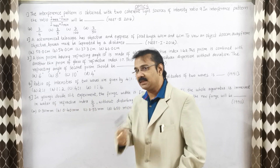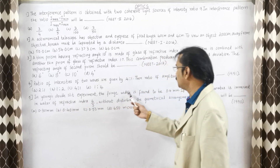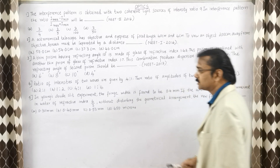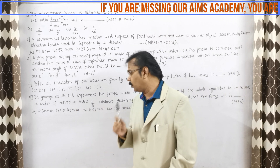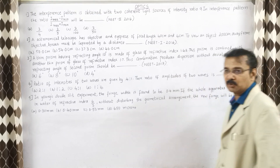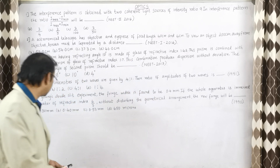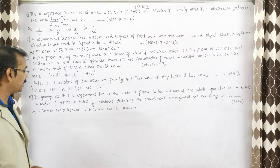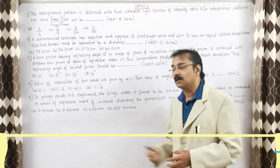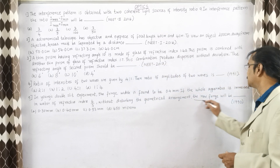Young's double-slit experiment problems are very important. In Young's double-slit experiment, the fringe width is 0.4 mm. If the whole apparatus is immersed in water of refractive index 4/3, without disturbing the geometrical arrangement, the new fringe width will be what? This question was asked around 1990, almost 31 years ago. The options are 0.30 mm, 0.4, 0.53, or 450 microns.